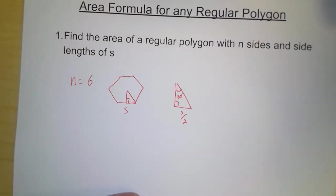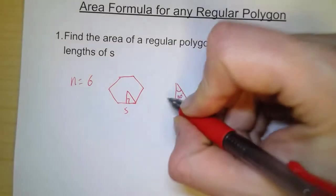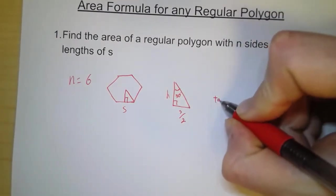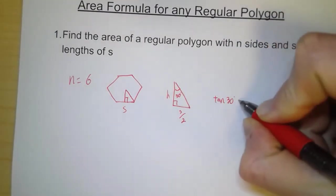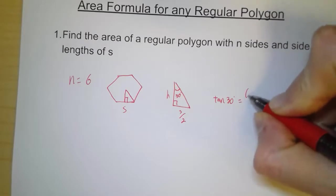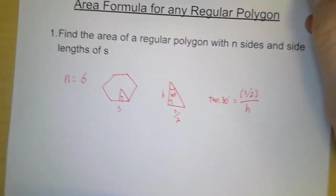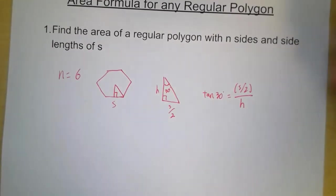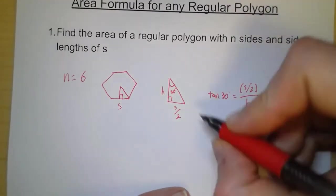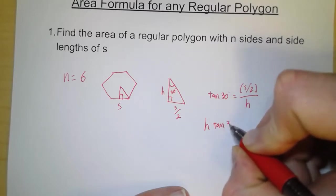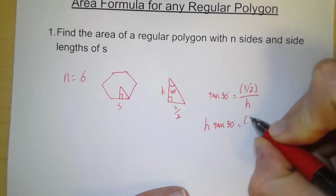The way we find the area of any triangle is one half base times height. We've got the base, we need the height. So to get that, we'll write tangent of 30 degrees equals the quantity s over 2 divided by h, and we want to solve for h. So we'll multiply h out.